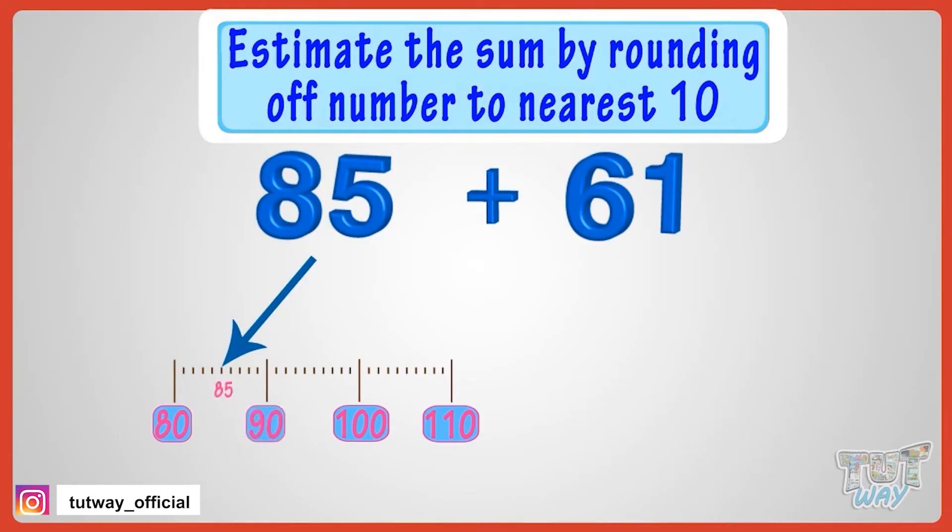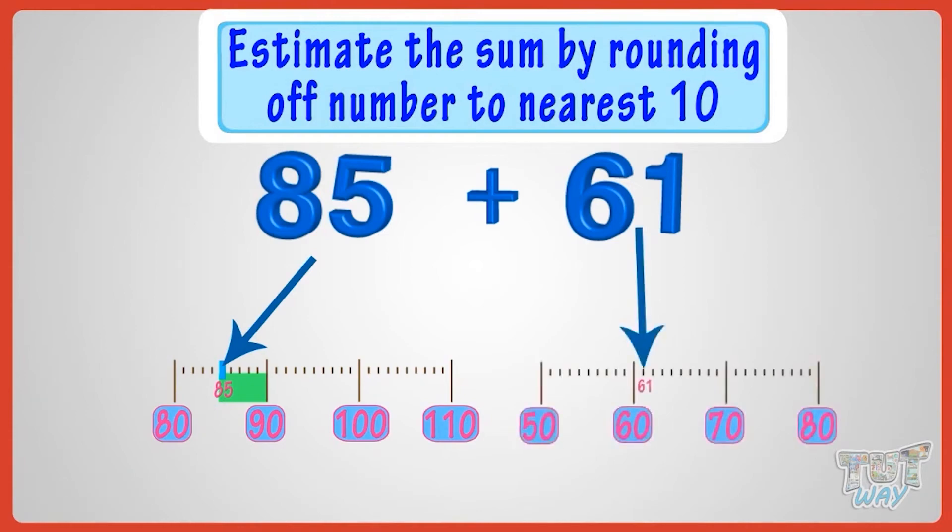Rounding off 61 to the nearest ten will give us 60 as 61 is below the 5 mark.